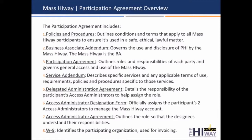Here's the whole package. It includes documents that need to be reviewed and signed and understood by the authorized signatory — like a CIO, CFO, president, or business owner, anybody that can legally bind the organization. You've got policies and procedures which outline the terms and conditions, a BAA, the participation agreement that outlines the roles and responsibilities of each party, and a service addendum that explains the specific services and any applicable terms of use or requirements for those services.